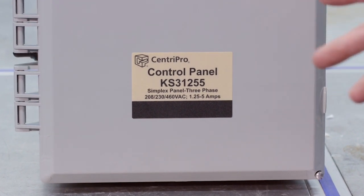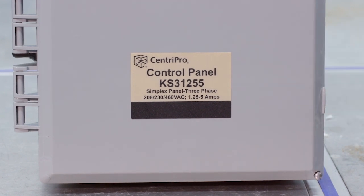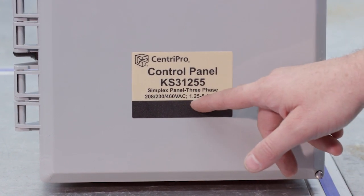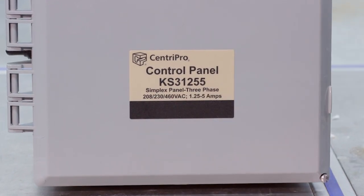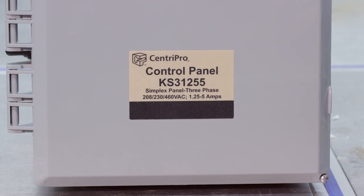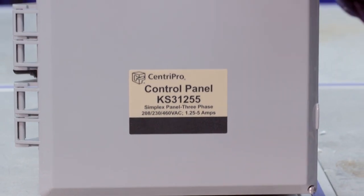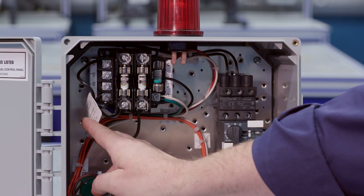We're looking at the control panel KS31255, simplex three-phase, 1.25 to 5 amps, and again it's multi-voltage. We've got to make sure that we wire this, and it's only going to be one wire to the proper voltage, making sure it's equal to the supply voltage, which is equal to the pump voltage.